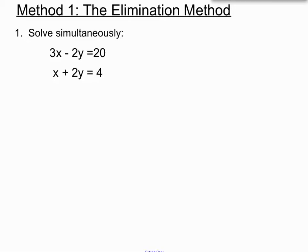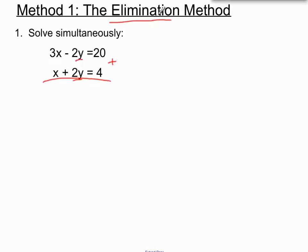We have 3x minus 2y equals 20 and x plus 2y equals 4. You'll notice here that our two y terms are matching up — they're the same size as each other. So if we add these two equations together, our y terms will disappear, they'll cancel each other out, they'll be eliminated. And it's called the elimination method for a reason.